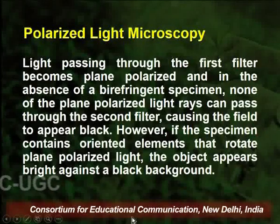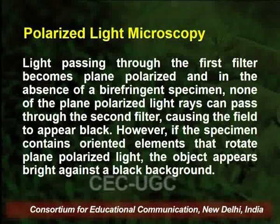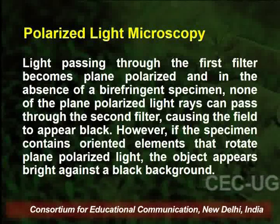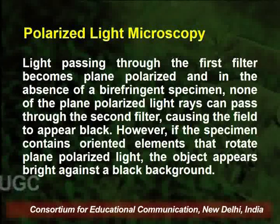Light passing through the first filter becomes plane polarized, and in the absence of a birefringent specimen, none of the plane polarized light rays can pass through the second filter because the second filter is kept at a right angle to the first filter. This causes the field to appear absolutely black. However, if a specimen contains oriented elements that rotate plane polarized light, the object appears bright against a black background.